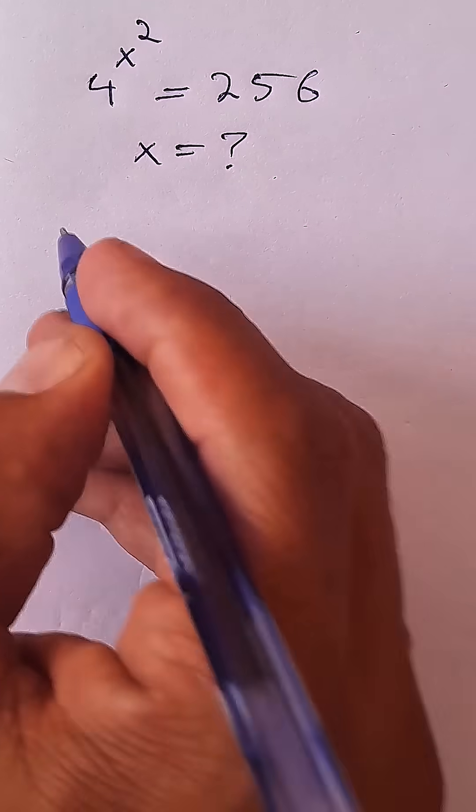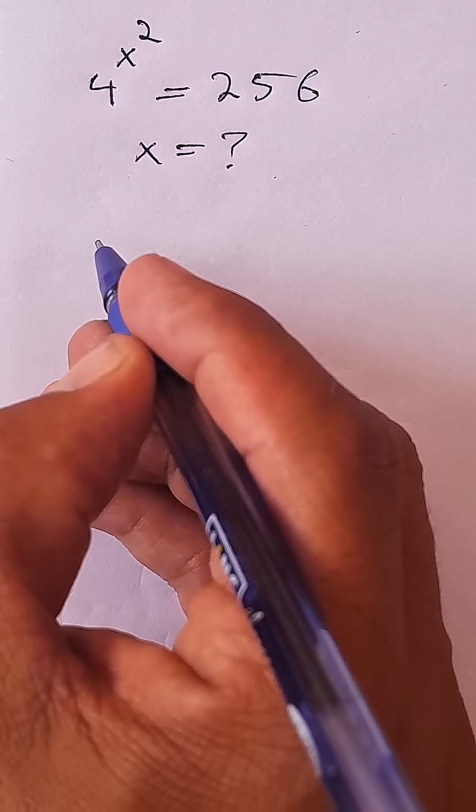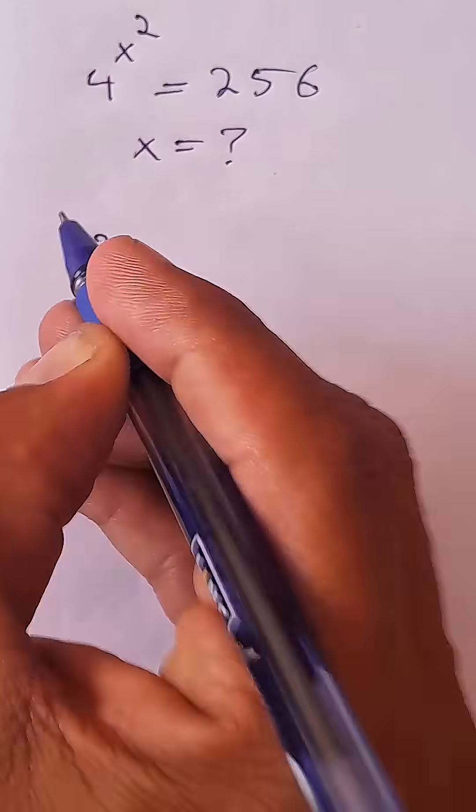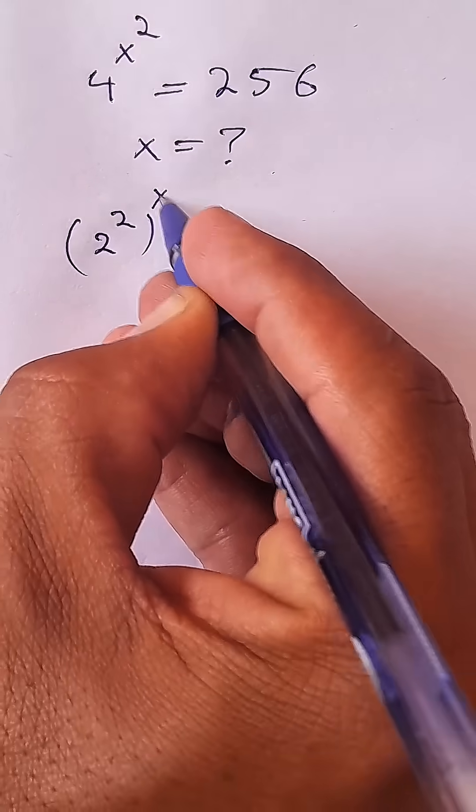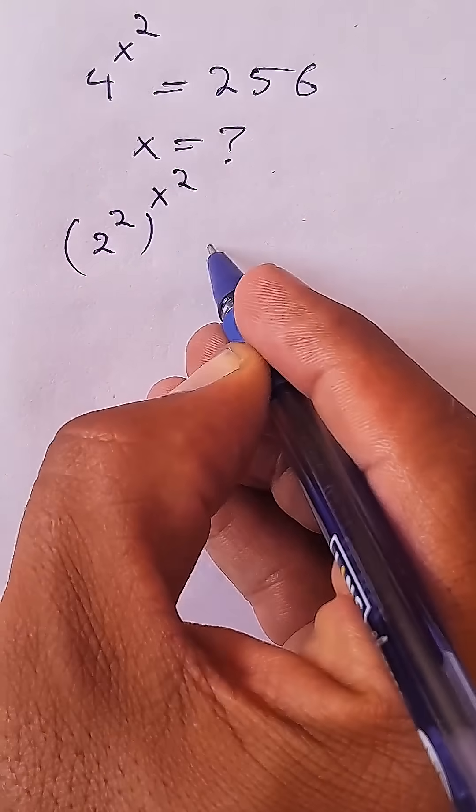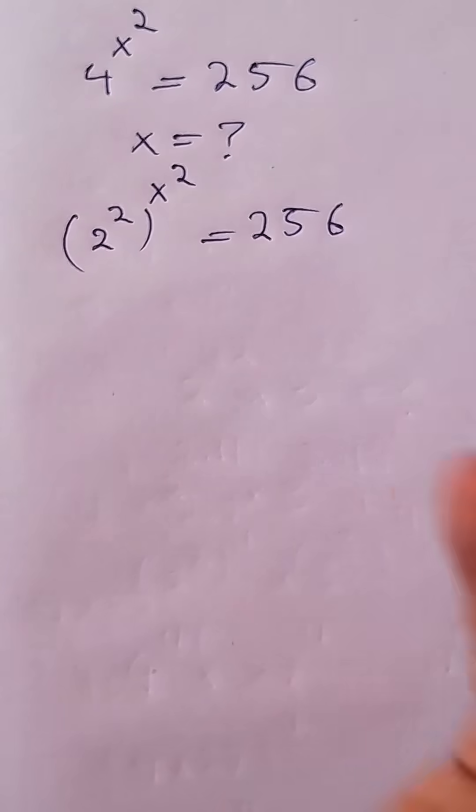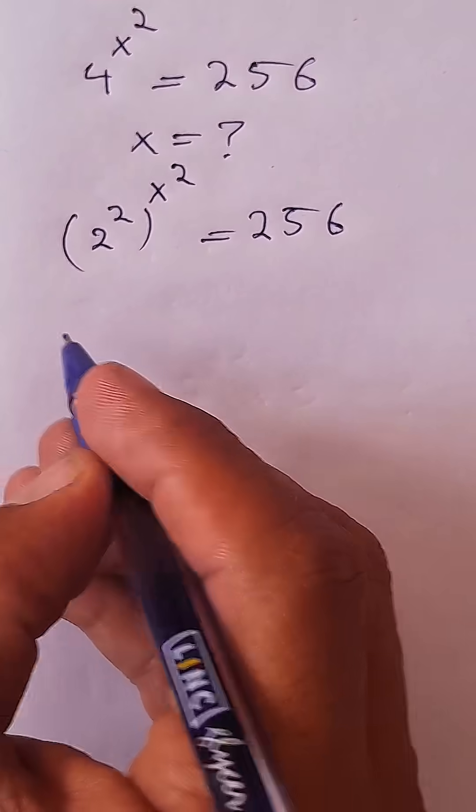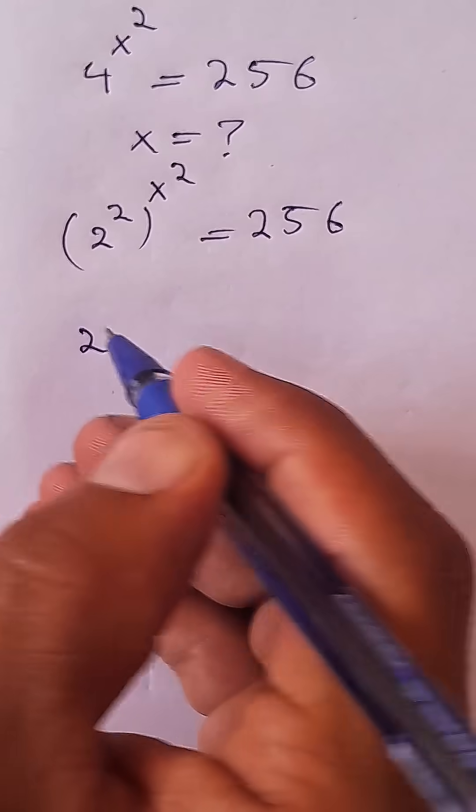What comes to mind is that instead of 4 to the power of x squared, I can write 2 to the power of 2, all to the power of x squared, equals to 256. Now this becomes 2 to the power of 2x squared equals to 256.